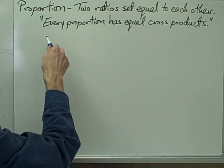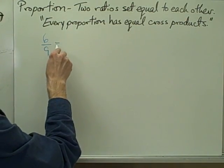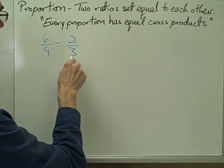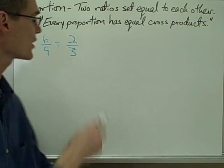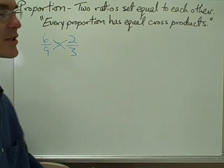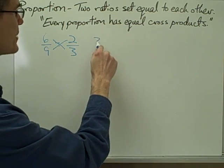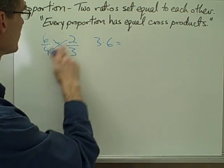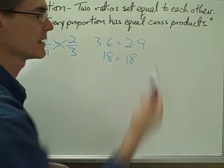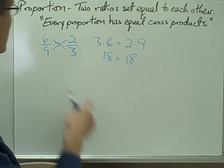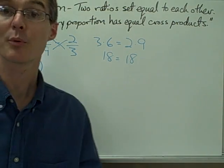When we say equal cross products — if you take this particular proportion, notice I have two ratios set equal to each other. When you multiply across the equal sign, you get equal numbers. That is, 3 times 6 is equal to 2 times 9: 3 times 6 is 18, and 2 times 9 is 18. This property turns out to be very useful in solving proportions.